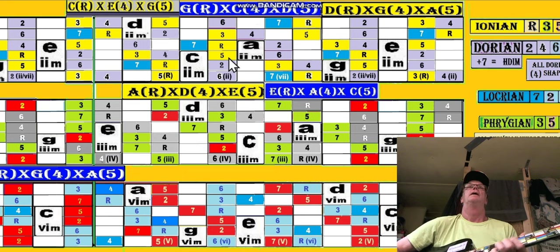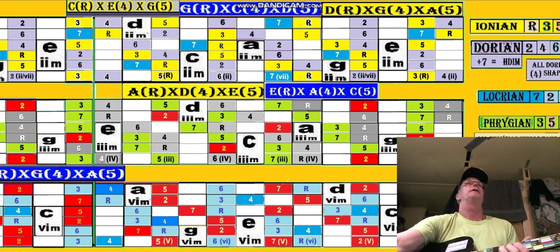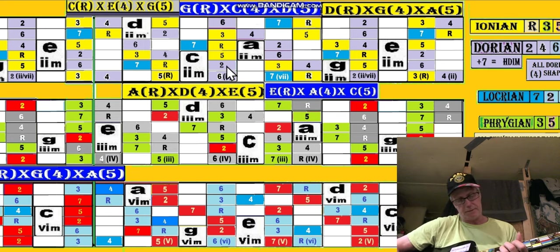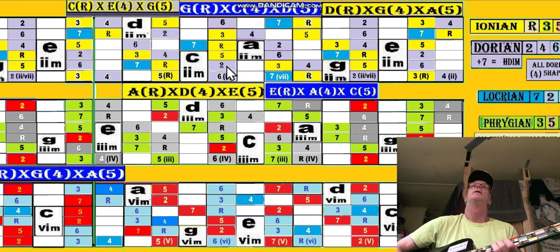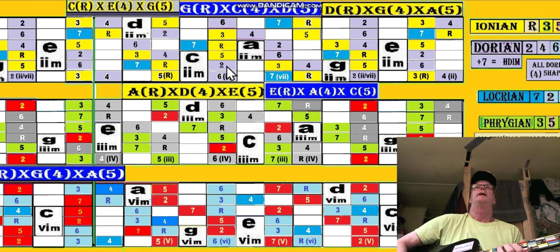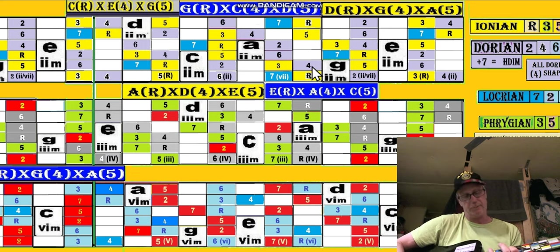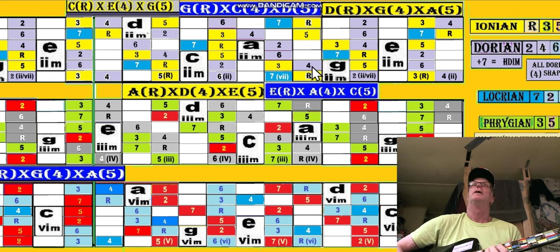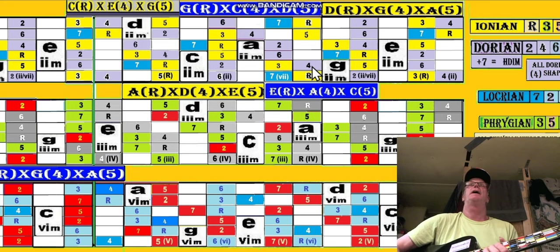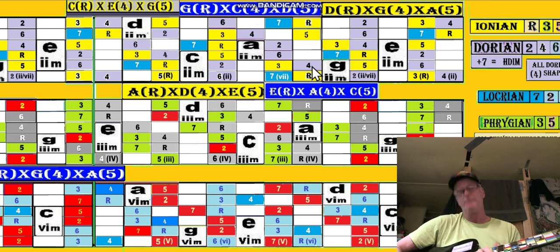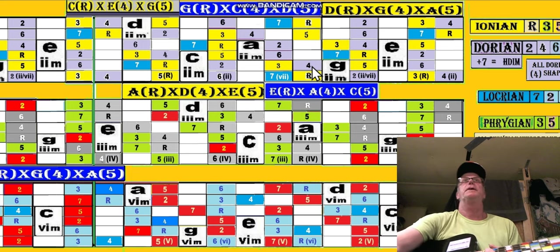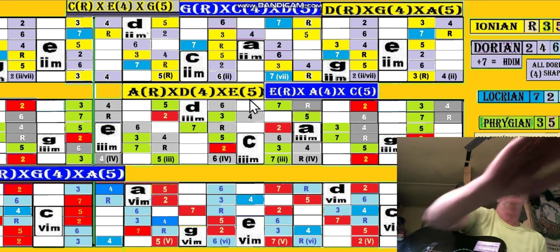Down, up to that five right there, back to that Dorian two, so we could go down from there. Now let's just do a nice minor third on the same string, and then back up to the five. Now we could take it to a G.